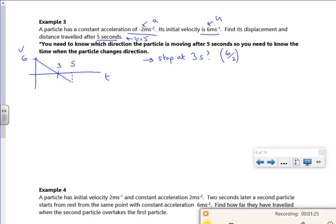Find its displacement and its distance. So displacement, that's no worries at all. So S, U is 6, V, A minus 2.